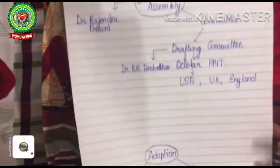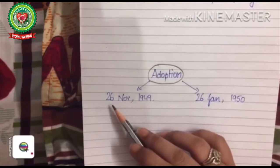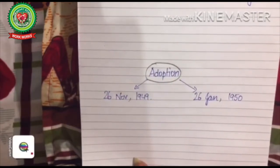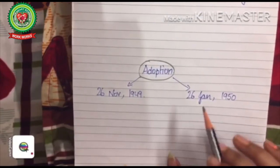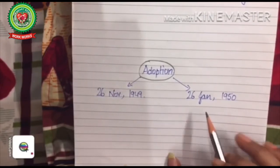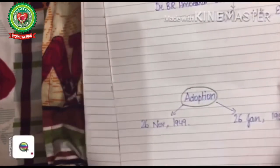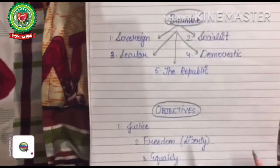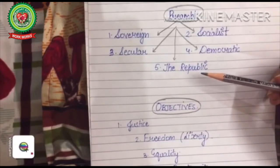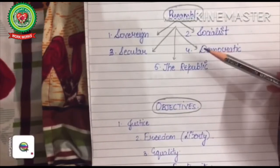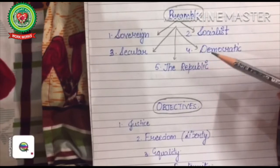The Constitution was adopted on 26th November 1949, but it came into force on 26th January 1950 — almost two months later. Later in this chapter we will discuss why the Constitution came into force after two months. After this, we will discuss the Preamble. The Preamble is an introduction to the Constitution. The idea of the Preamble has been borrowed from the USA, and the language written in the Preamble has been borrowed from the Constitution of Australia.